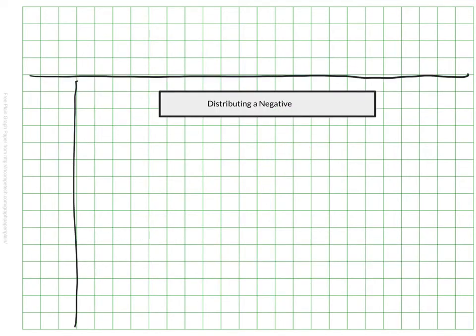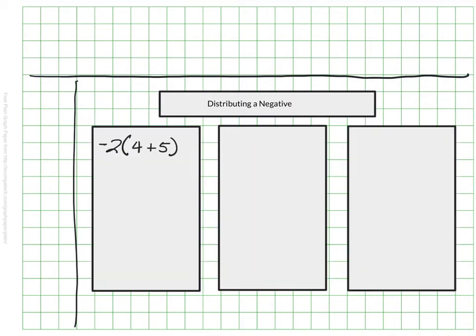So while that was all something you've seen before, now we're going to talk about what's new, which is distributing the negative. Sometimes the negative value is on the outside and is what is getting distributed. Similar to the first example I gave, I have 2 times parentheses 4 plus 5, but this time it's a negative 2.